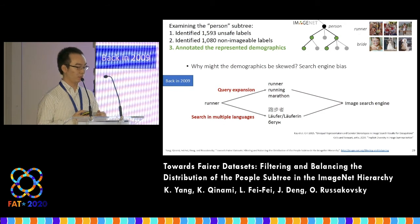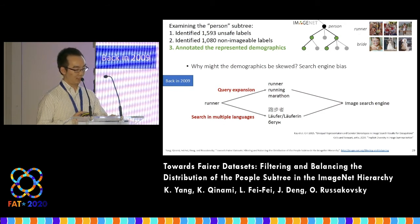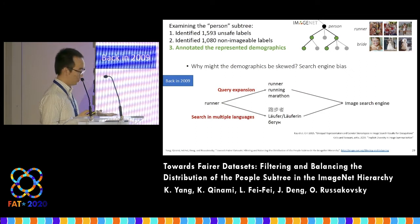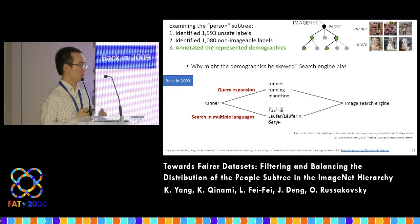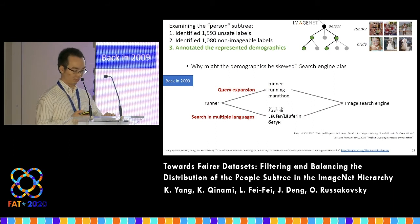Second, in order to get images from multiple cultures, they also translated the keywords into multiple languages. However, despite these measures, we still observe that bias and misrepresentation exist in the distribution of images in ImageNet.